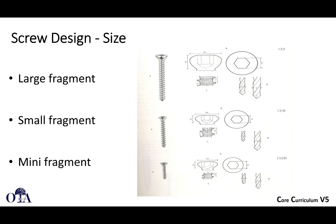Screws come in different sizes. In the original AO trays there's large fragment, small fragment, and mini fragment. Classic AO large fragment includes 3.2-millimeter and 4.5-millimeter drills for 4.5-millimeter screws. Small fragment typically uses 3.5-millimeter screws with a 2.5-millimeter drill. Mini fragment includes 2.1-millimeter and 2.7-millimeter screws with corresponding drills, and even smaller options like 1.5-millimeter.